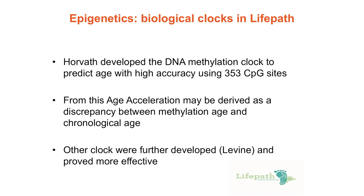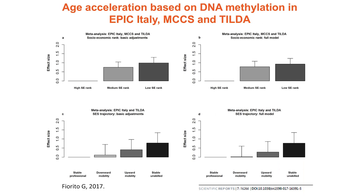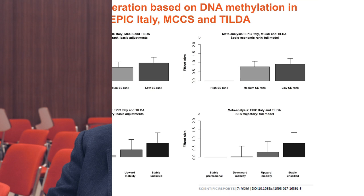The other type of markers we use is epigenetic markers, and particularly the concept of age acceleration. There is a specific indicator based on methylation of DNA which is strongly associated with age — a kind of biological age indicator — so that some people are biologically older than they are chronologically. This is also associated with socioeconomic status.